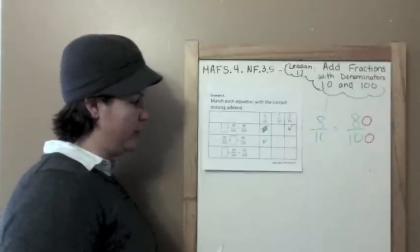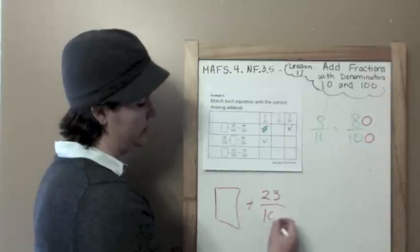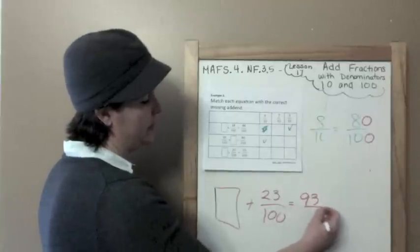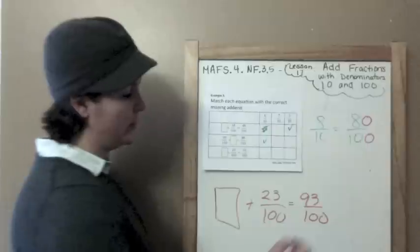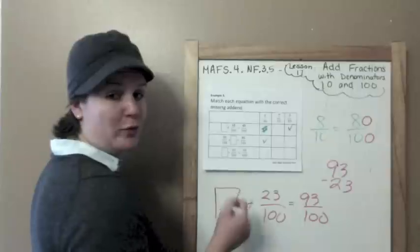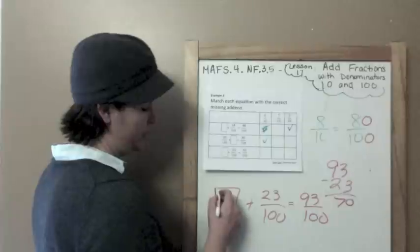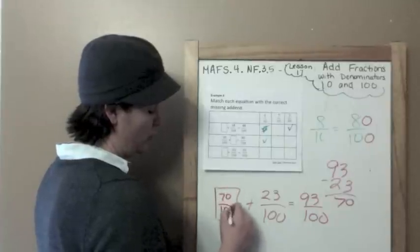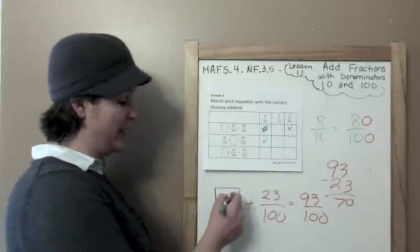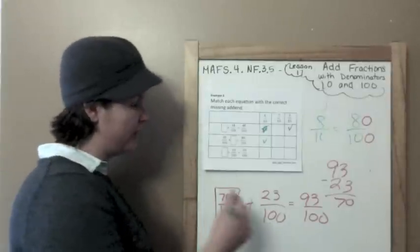And our final part of Example 3: what plus twenty-three hundredths equals ninety-three hundredths? I can subtract what I know — ninety-three minus twenty-three — to find my numerator. That gives seventy one-hundredths. I don't have seventy hundredths, but with our equivalent fraction move, I have seven-tenths.